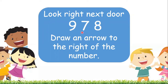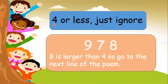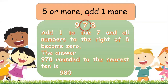Look right next door — draw an arrow to the right of the number. The right of number seven is number eight. Since eight is larger than four, we go to the next line of the poem: five or more, add one more. So we will add one to the seven, and all numbers to the right of eight become zero. The answer is 978 rounded to the nearest ten is 980.